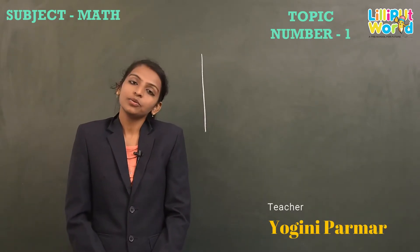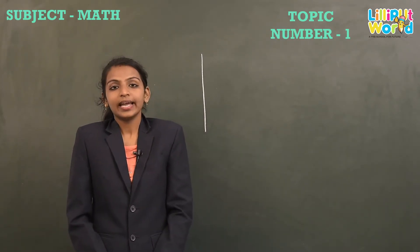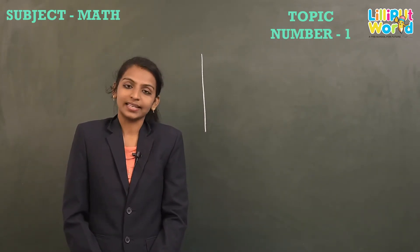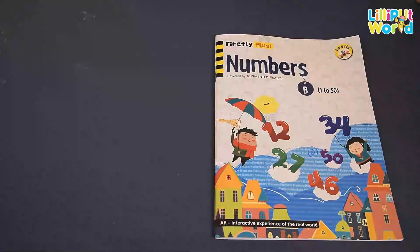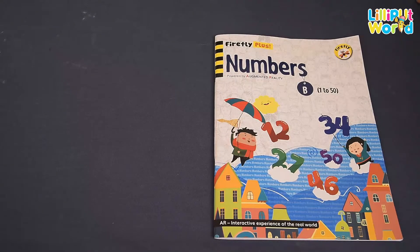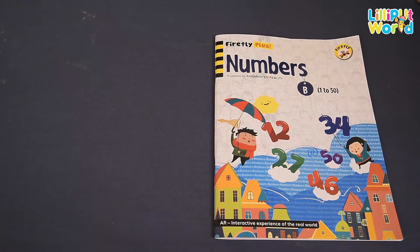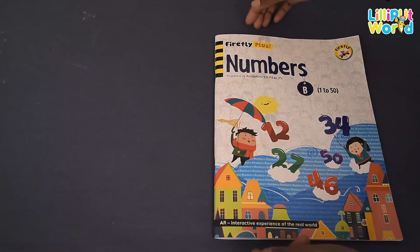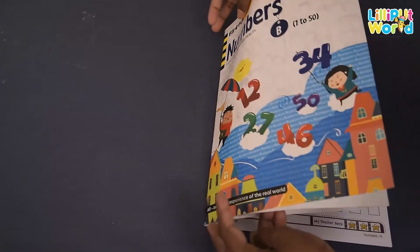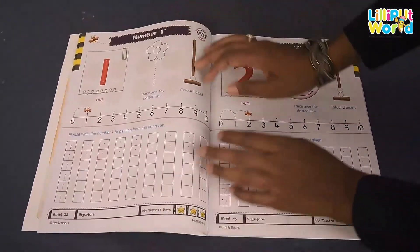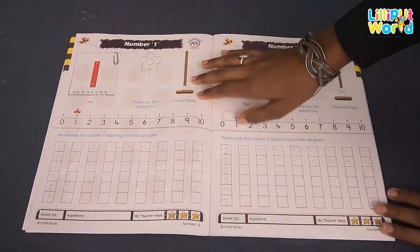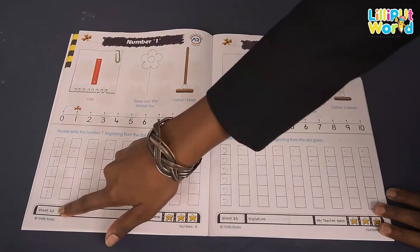Now let's do number one in the book. Come on, take your numbers book and go to page number 22. Open page number 22.